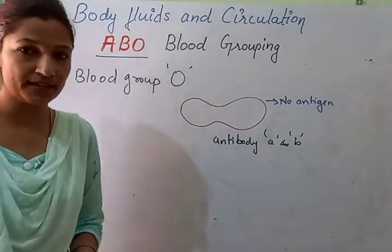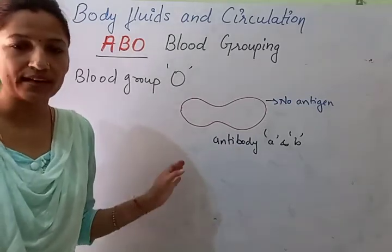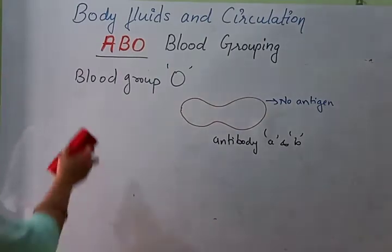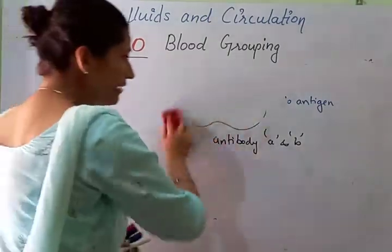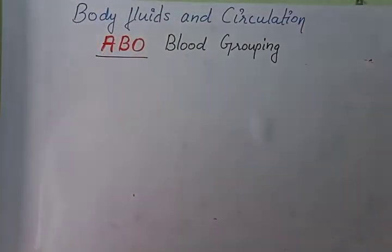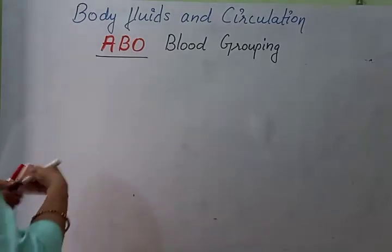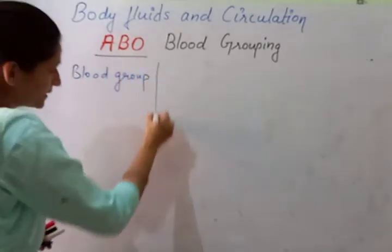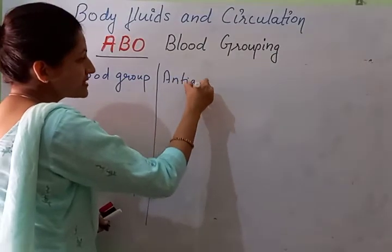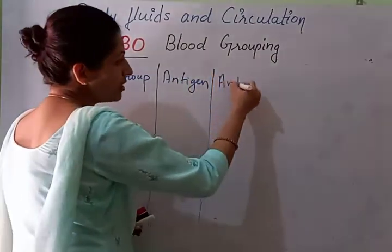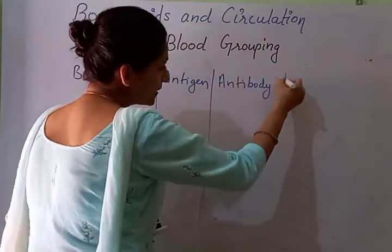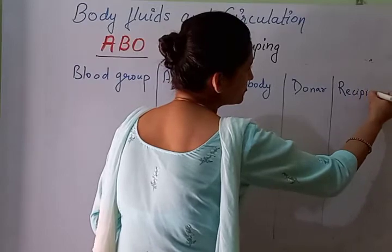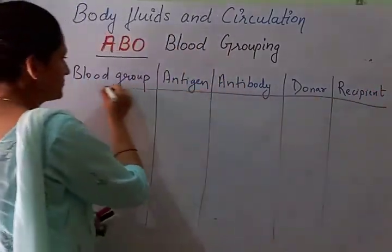We will now see the compatibility — who can give blood to whom and who can take blood from whom. We will see the recipient and the donor by making a tabulated form of all the content we have discussed, which will also serve as a recapitulation. The table columns are: blood group, type of antigen present, type of antibodies present, who will be the donor, and who will be the recipient.